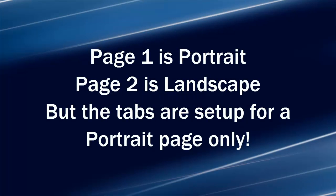Let's say your first page is in portrait orientation and you have a landscape orientation on the second page, and the tabs in the header are set up for the portrait page only. Let's say you have a tab in the middle of the page and a tab in the right margin. When you move to the landscape page, the header text is not lined up in the middle or in the right margin for a landscape page, because the tabs are set for a portrait page.